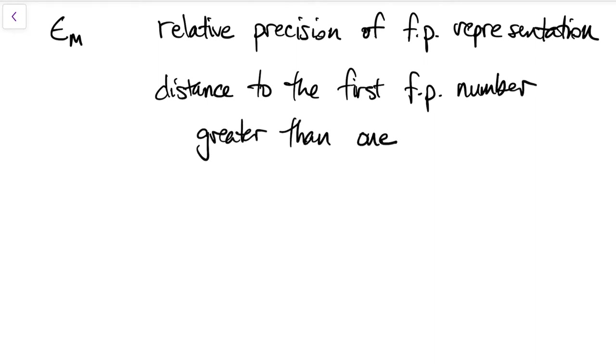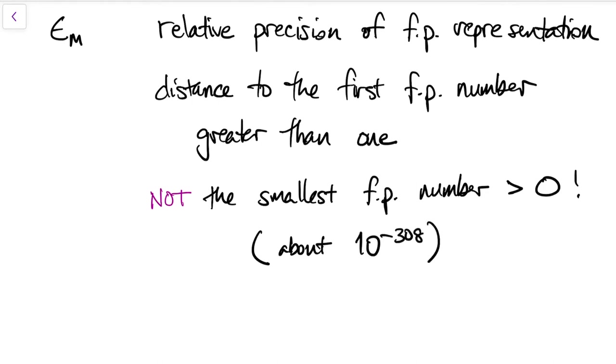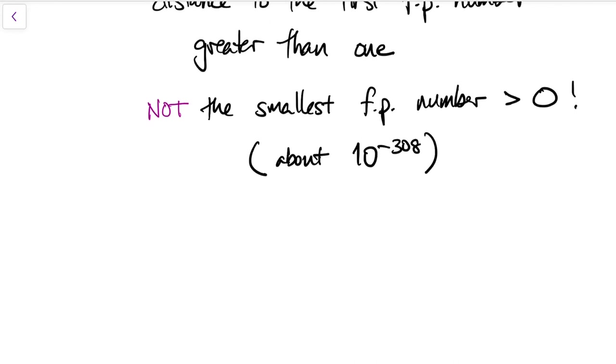One thing machine epsilon is not, and this is a common mistake, is that it's not the smallest positive value we can represent. That's actually a much smaller number, around 10 to the minus 308. It's just the smallest value we can represent relative to 1.